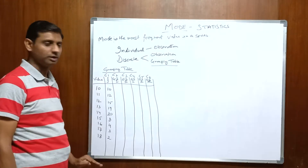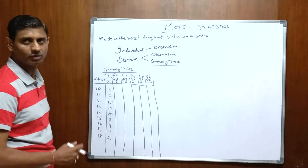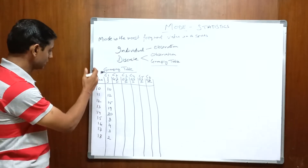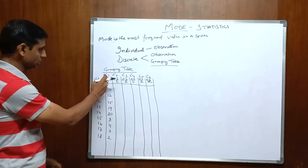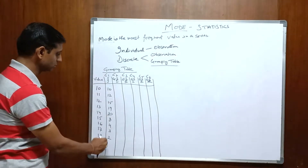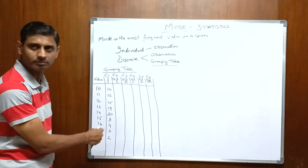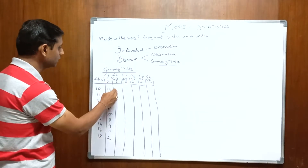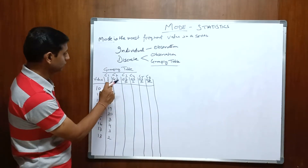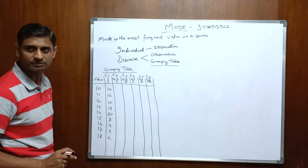Now we need to create the grouping table. In the grouping table, we need to create 6 columns in front of the values. Let me explain what all 6 columns denote. The first column, C1, contains the original frequencies respective to each value. The second column contains the sum of 2 frequencies — that is, a group of 2 starting from the first frequency.